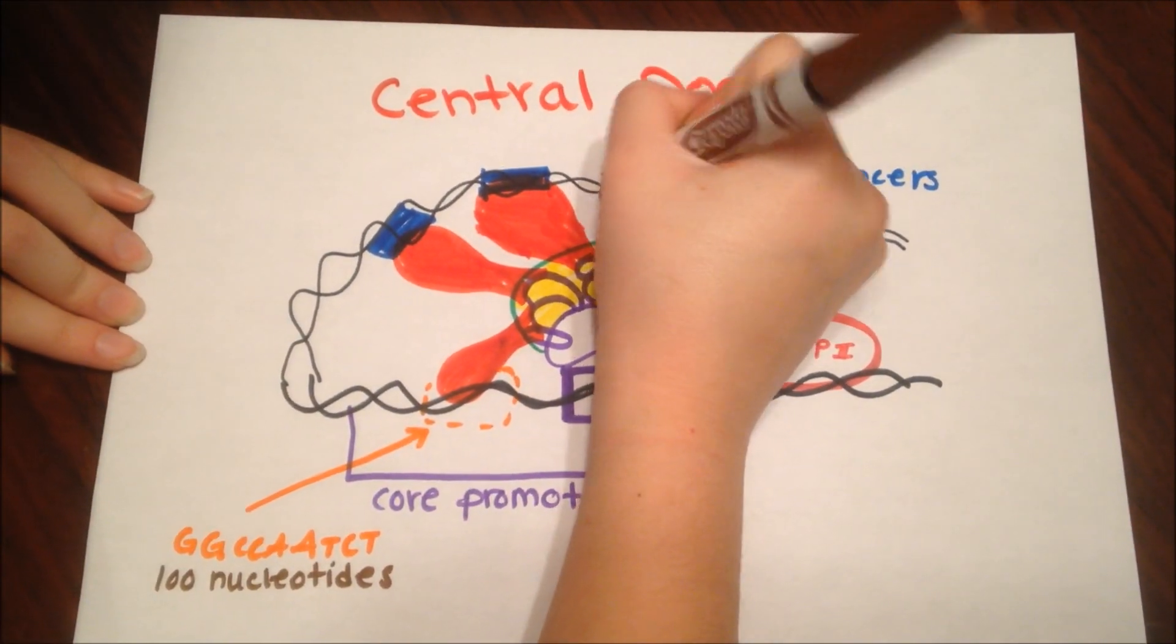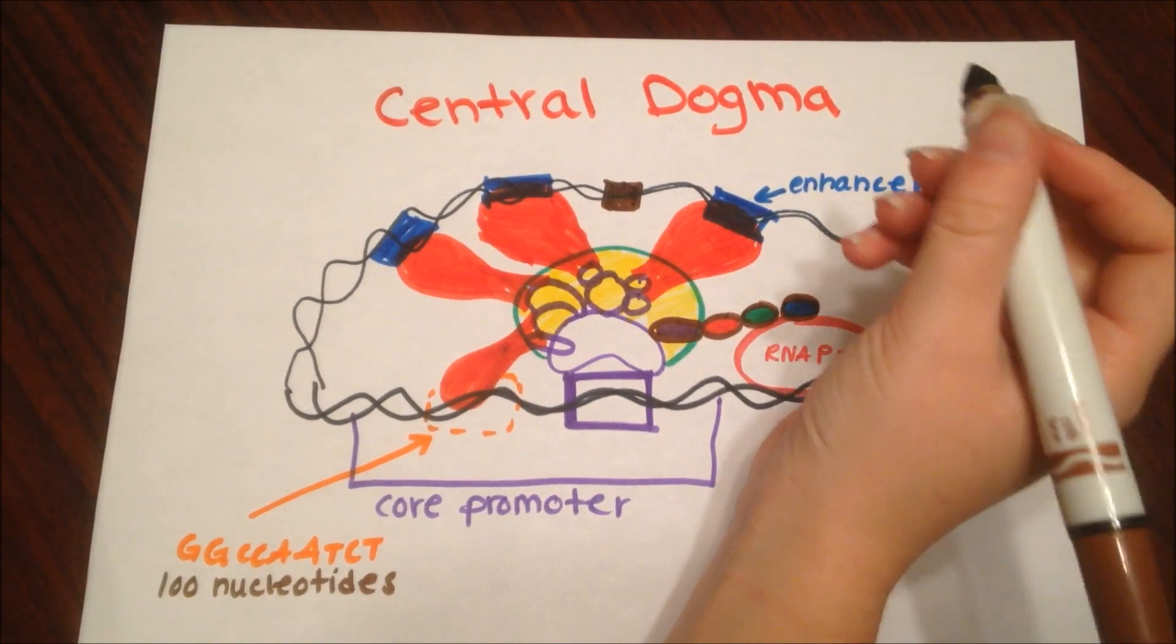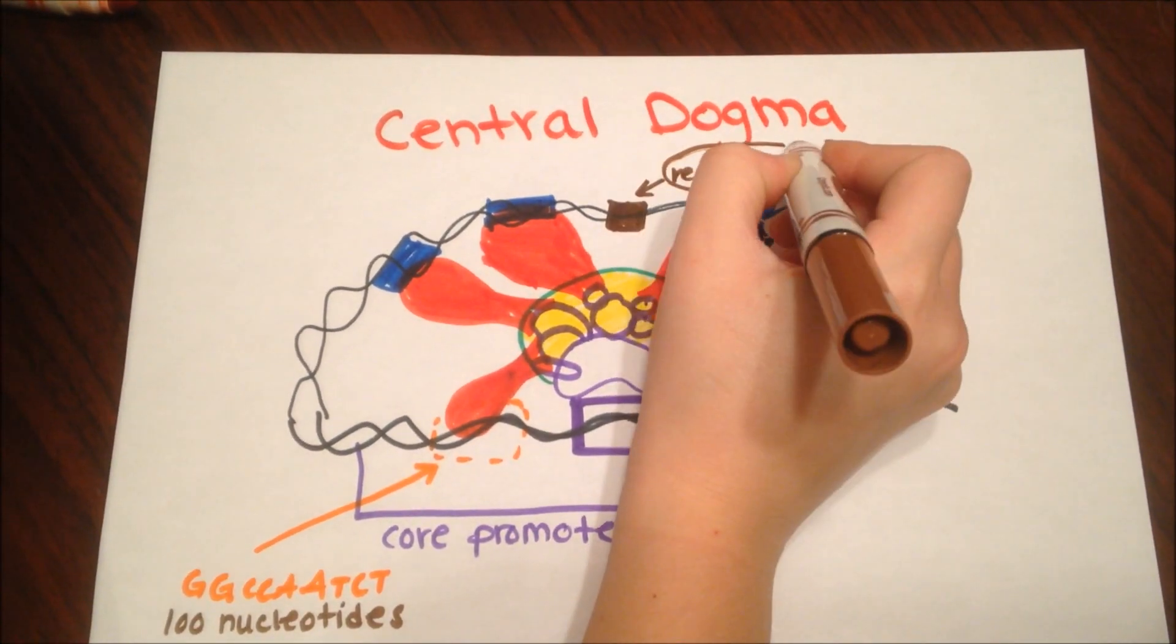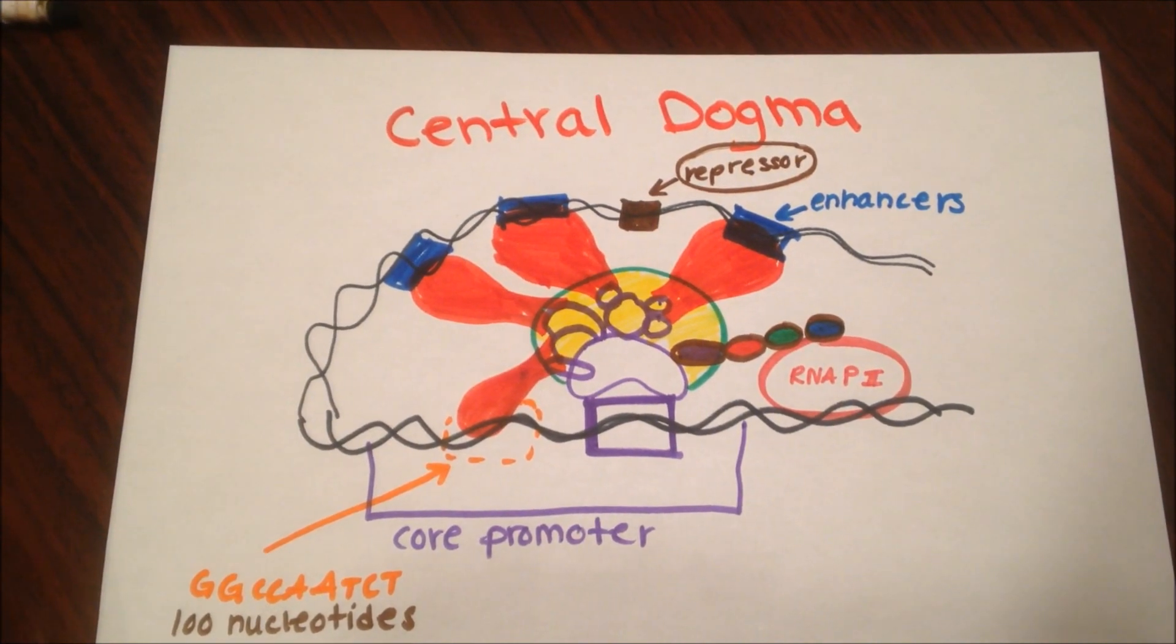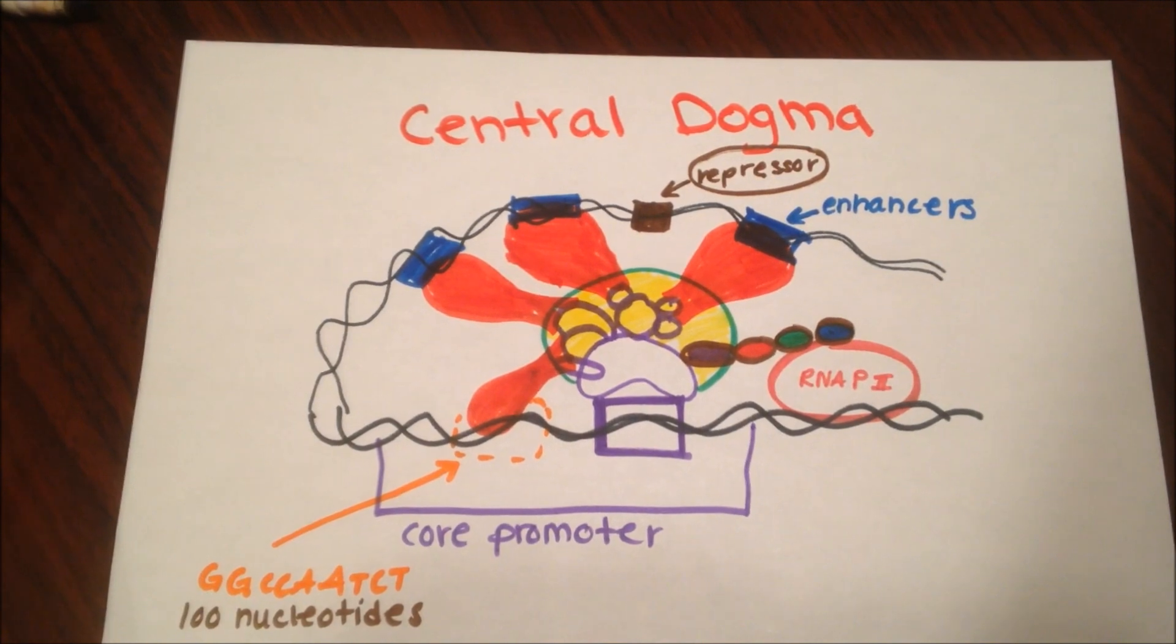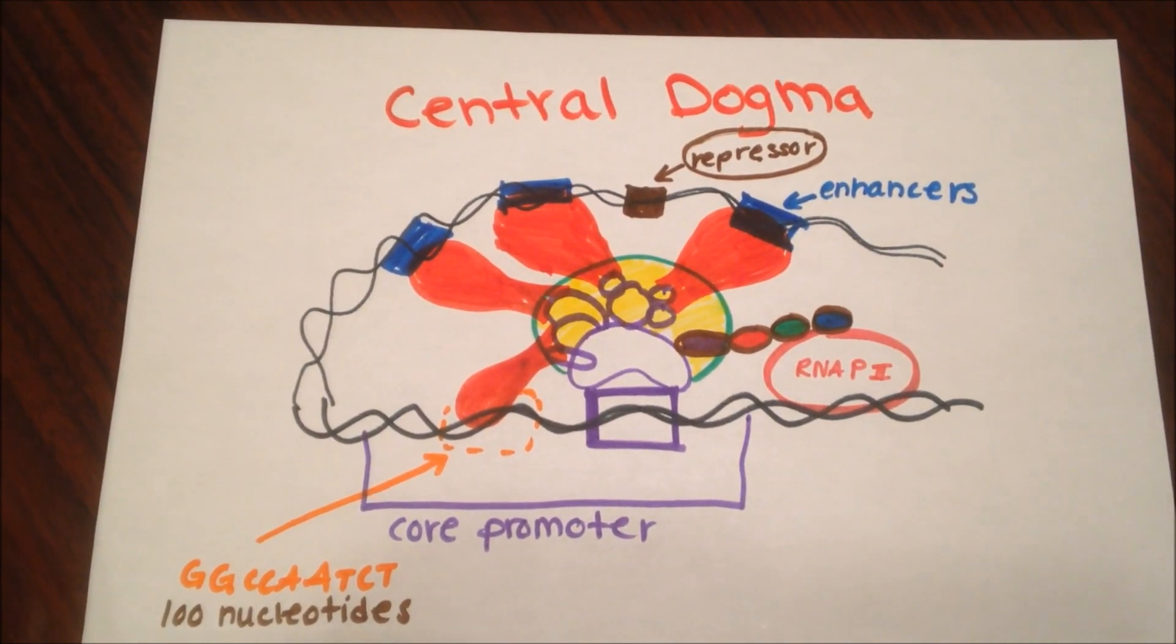However, if on the strand of the DNA, a repressor binds to a silencer, here's a silencer, and here's a repressor, then what happens is that the adjacent enhancer's shape gets changed so that the activators cannot attach and synthesis is either slowed or non-existent.